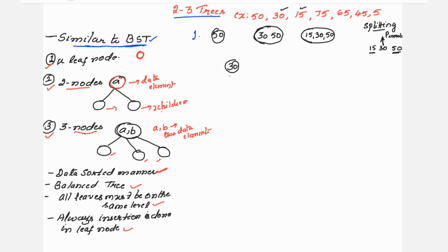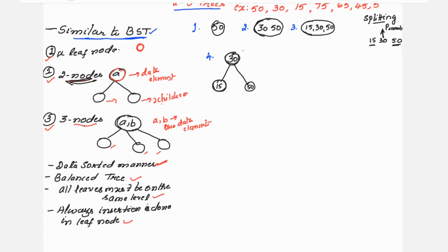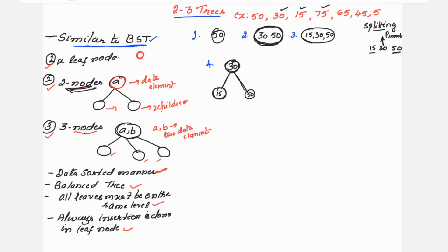After promoting 30 to the upper level, you have 15 and 50 as its children. So 30 is a two-node with one data element and two children: 15 on the left and 50 on the right. In step two you saw a three-node without any children, and now you see a two-node with two children.